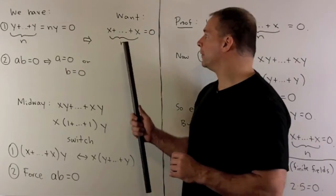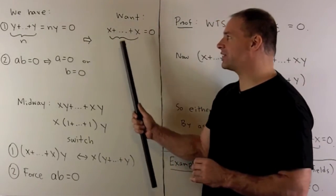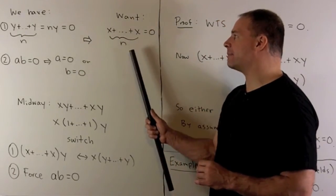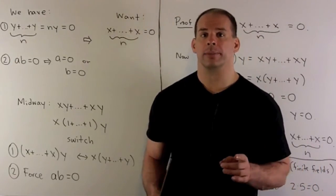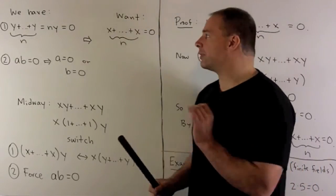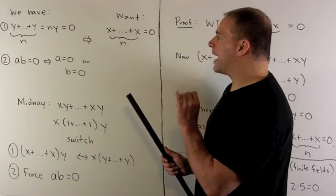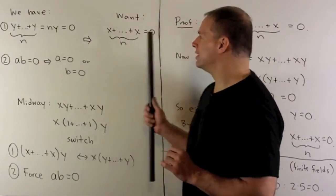On the other side, we want to show if I take x, add it to itself n times, I get zero. That's for any x in R. Now, if we stare at this for a little bit, we want to find the middle ground from here to here.